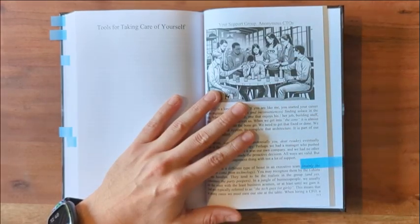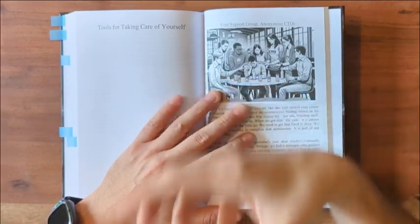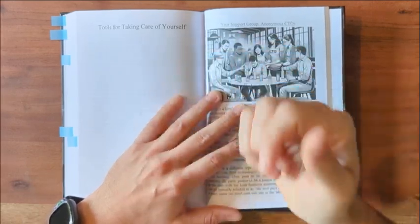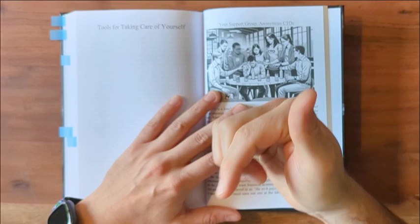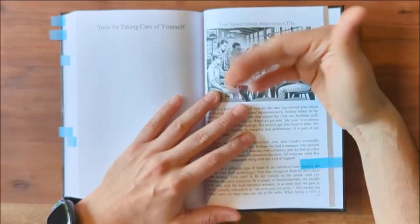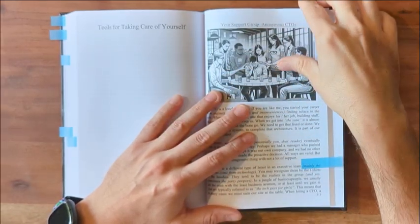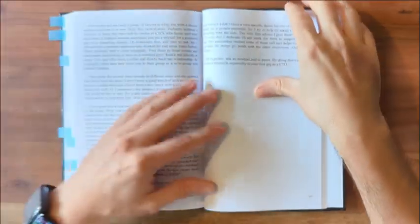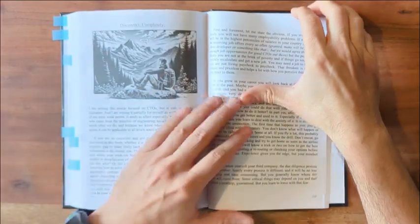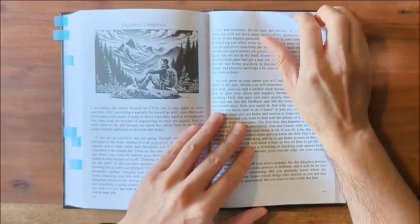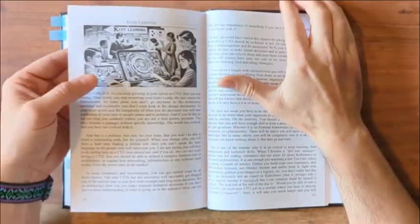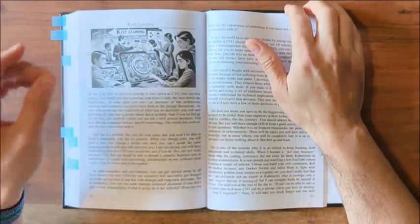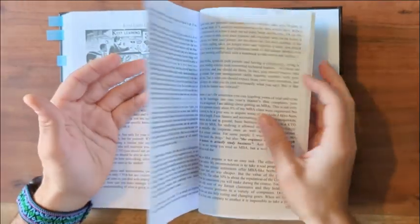And the last chapter is tools for taking care of yourself. The CTO job is a lonely one, and sometimes it can be frustrating or even sad. So I want to put some elements or some elements of support that have helped me and my friends along the way, like a supporting group, how to disconnect completely. Very difficult, or at least for me. How to keep learning, really important to keep a finger, two or five, in technology, and so on.